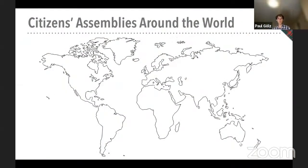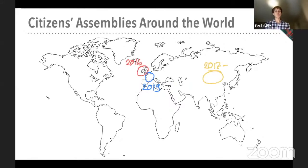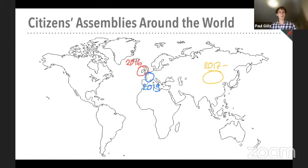Ireland is one prominent example, but recently there has been a big surge in citizens' assemblies all over the world. France had a very high-profile Citizens' Assembly in 2019 on climate change. Mongolia, ever since 2017, has had a law that any change to their constitution must be accompanied by a Citizens' Assembly. This shows that citizens' assemblies are not only for the West — they really have appeal all over the world and many different regions are experimenting with this now.